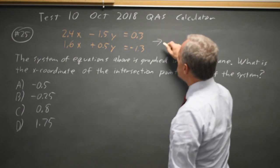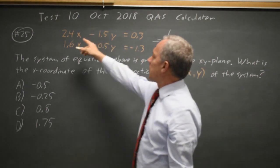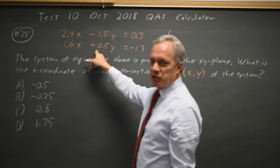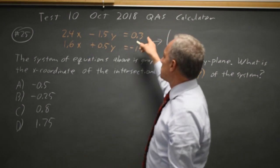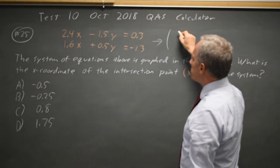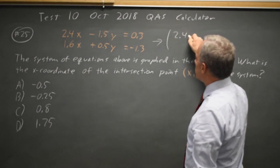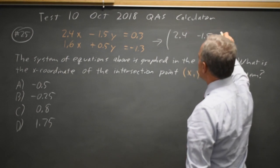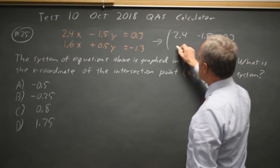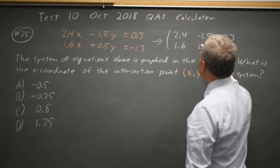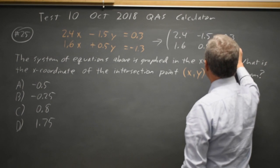I can write this in matrix form since I have the variables in the same order for both equations equals a constant by itself on the other side. I can write a matrix of the coefficients 2.4, negative 1.5, 0.3, 1.6, 0.5, and negative 1.3.